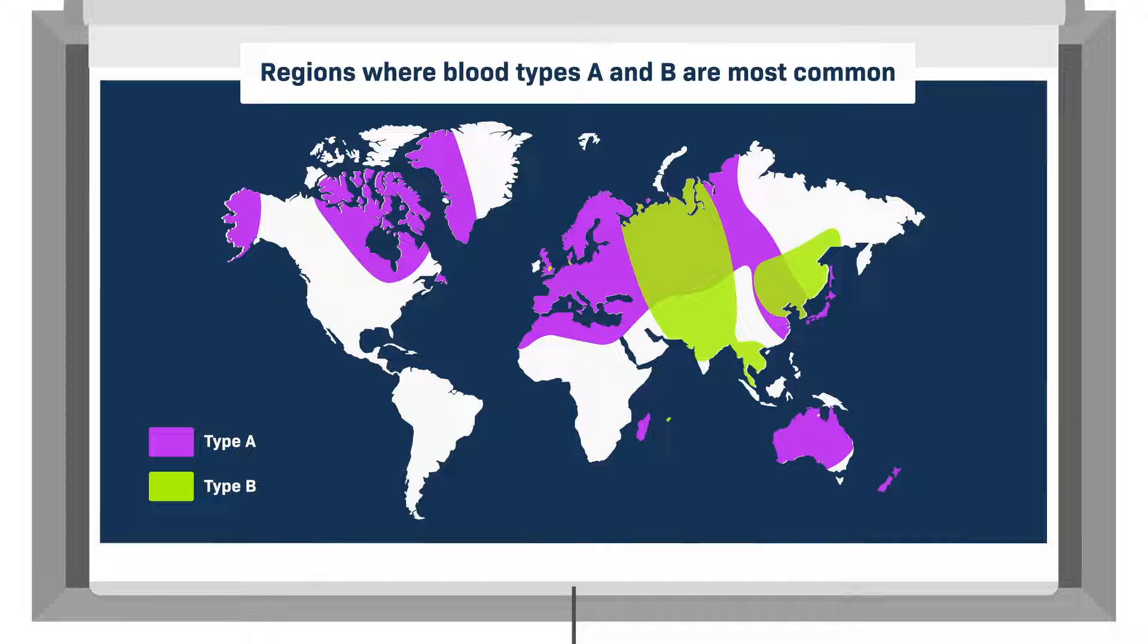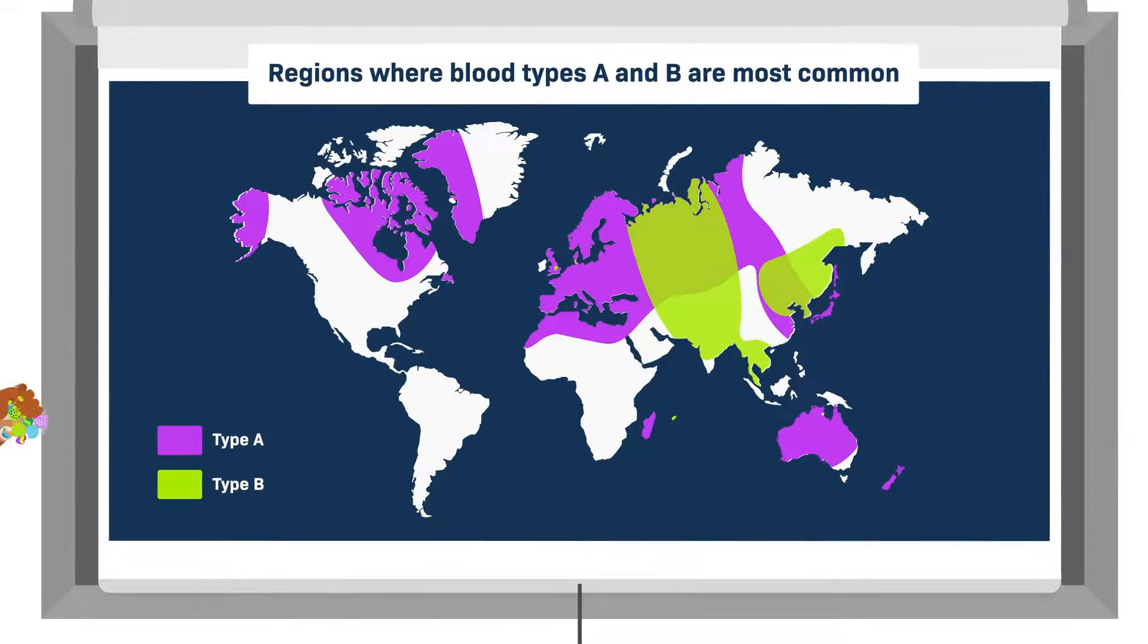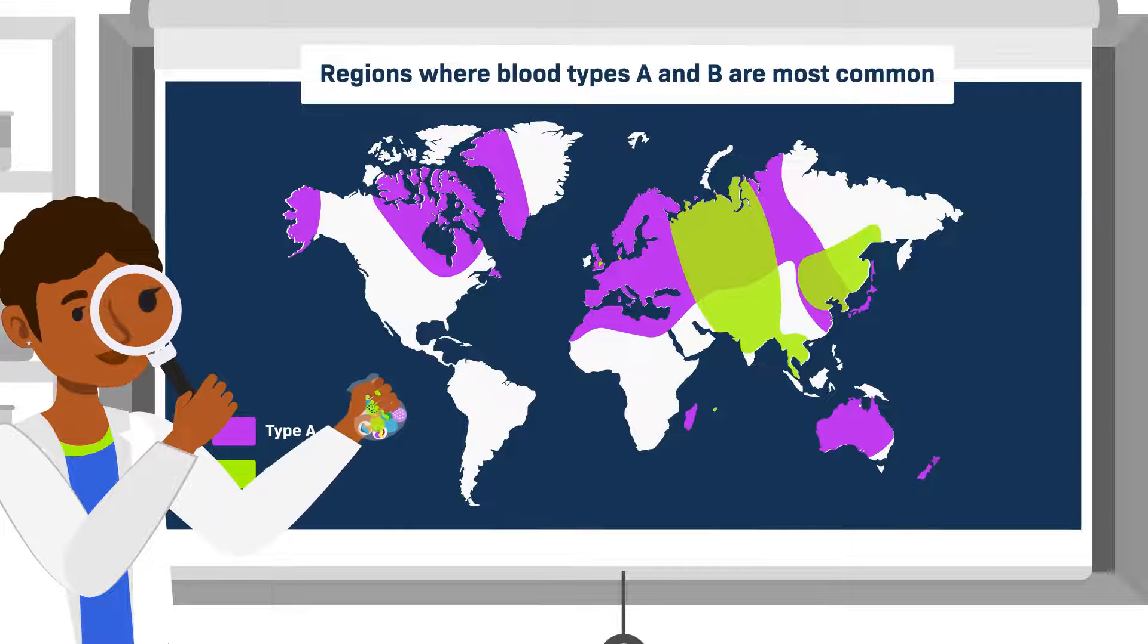As in the case of skin tone, today humans have different blood types as a result of their environment and natural selection, or this happened by chance during human migration. This map shows the regions in the world where blood type A is most common as opposed to type B.